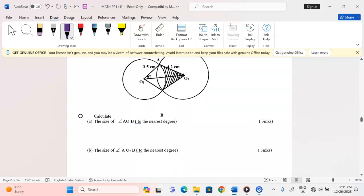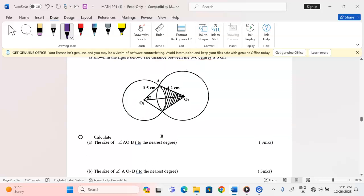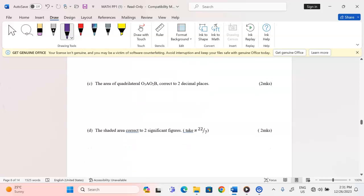The distance between the two centers is 6 centimeters. Calculate part A, the size of angle AO1B to the nearest degree. Therefore, I want us to calculate the angles just as we have been told to calculate them.